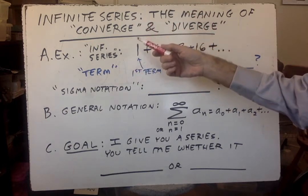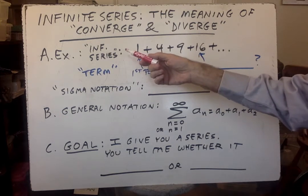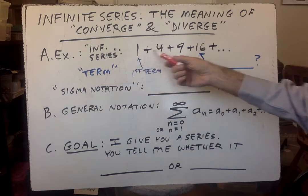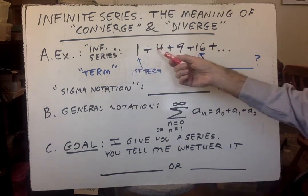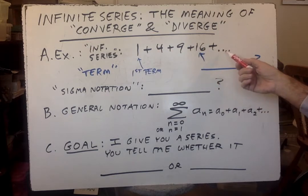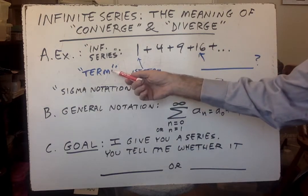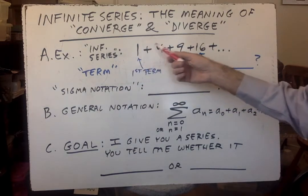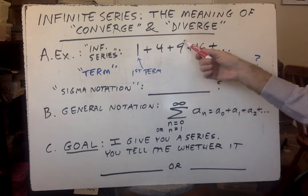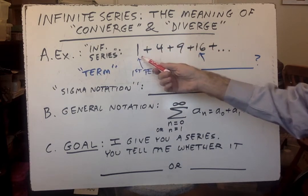First, let's get some terminology out of the way. Infinite series looks like this: numbers with plus signs between them and no end to it, and a pattern so you can predict the next term, like 25. You want to be very careful you use the word term correctly. This is a term, four is a term, nine is a term. That's the first term in this series.